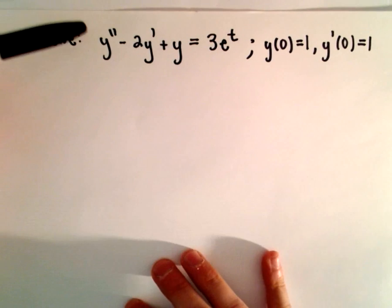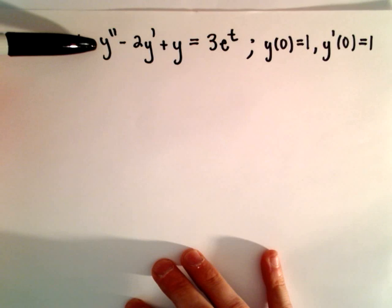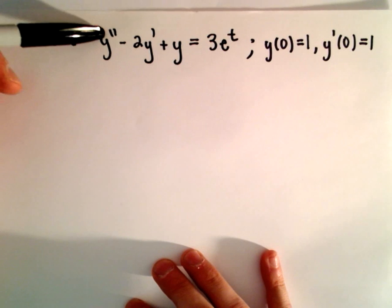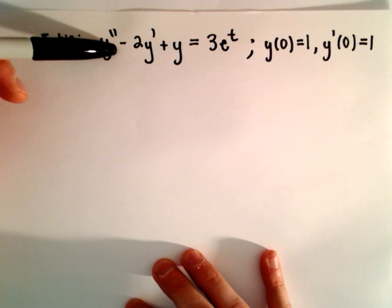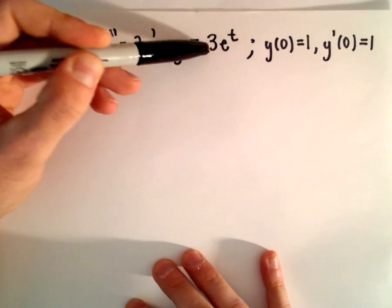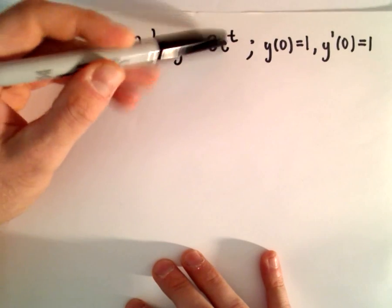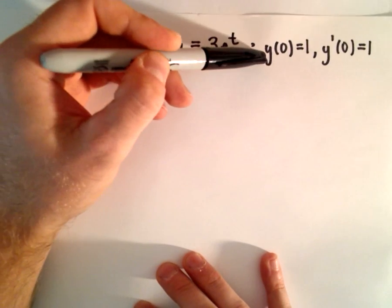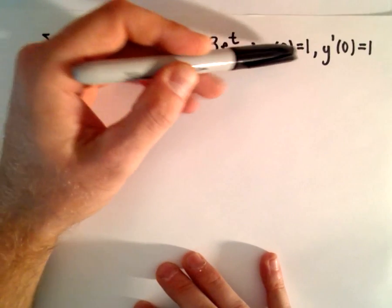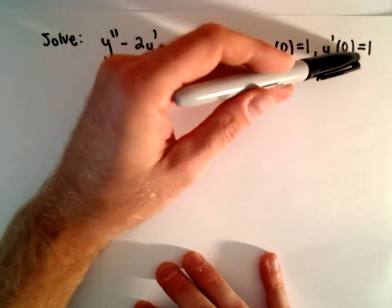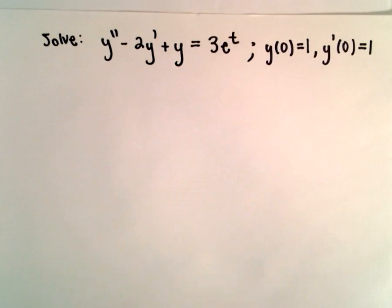So this is what we're going to do. We're going to solve the differential equation y double prime minus 2 times y prime plus y equals 3 times e to the t. We have the initial conditions that y of 0 equals 1 and y prime of 0 also equals 1.